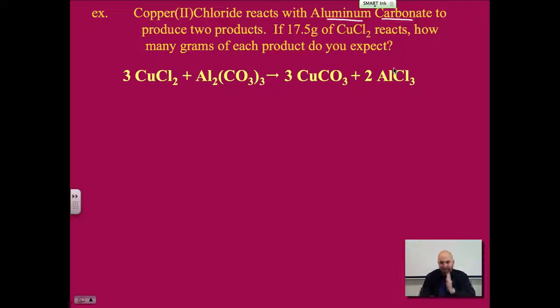Now, now that we have the balanced equation, let's write what's given. It says 17.5 grams of CuCl2 reacts. How many grams of each product? Well, I'm going to put CuCO3 and how many grams of AlCl3? All right. So basically what we're doing, we're going from here to there, and we're also going from here to here. So we're doing two steps. No big deal. It's just a grams to moles to moles to grams. Let's grab a color that's pretty easy to differentiate.